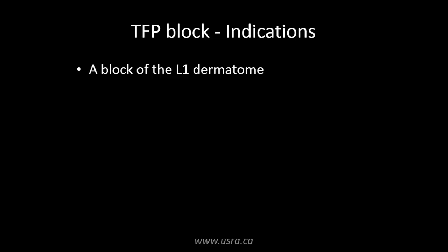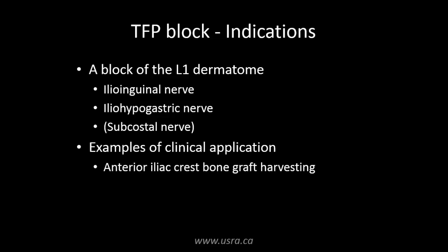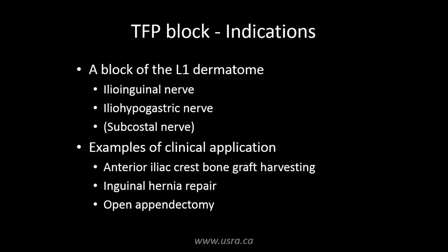The transversalis fascia plane block, or TFP block, is a truncal block that targets the L1 nerve branches, namely the ilioinguinal and iliohypogastric nerves. Spread can also occur to the subcostal nerve, which is a branch of the T12 spinal nerve. We have found this block particularly suited to providing analgesia in anterior iliac crest bone graft harvesting, as the block is performed proximal to the L1 branches that innervate the anterior iliac crest. It would also be a suitable analgesic option in any surgery involving the L1 dermatome, including inguinal hernia repair and open appendectomy.